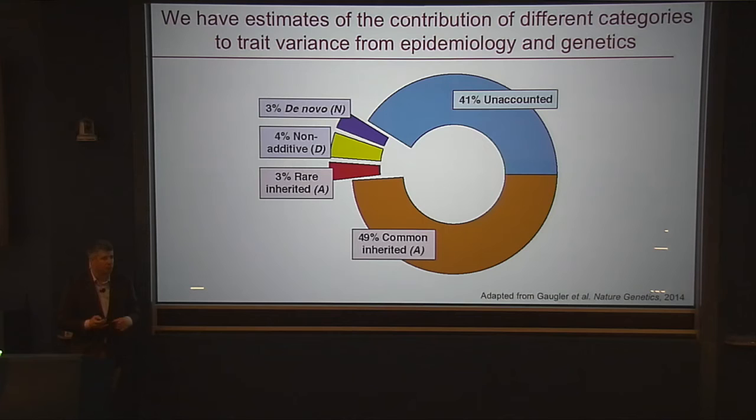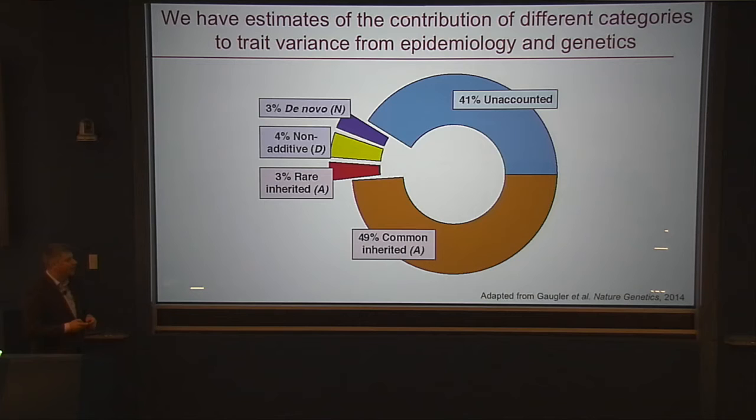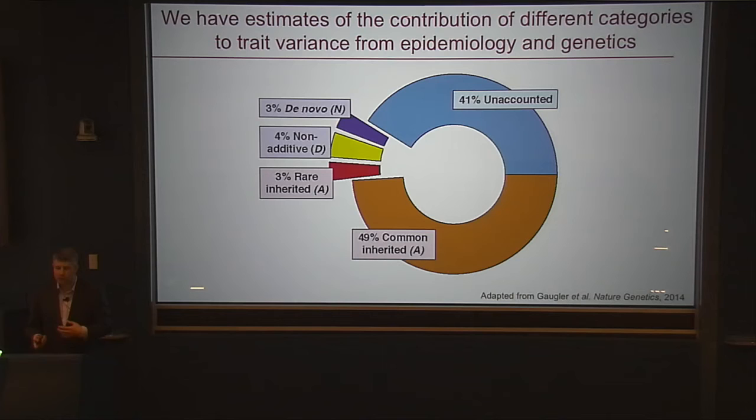When we start combining epidemiological data with genetic data, we can build this big picture. About 50% of autism comes from very small common variants, each of individually very small effect — and to date we don't have a single example of one of those. In contrast, a very small 3% contribution comes from de novo mutations. Non-additive variants — such as recessive homozygous ones — account for about 4%. There is a small contribution from rare inherited variants, though not well defined. About 41% is unaccounted for in this model — often referred to as environment, but I've left it as unaccounted. It could be de novo mutations we haven't found, interactions between different genes, or just random chance.